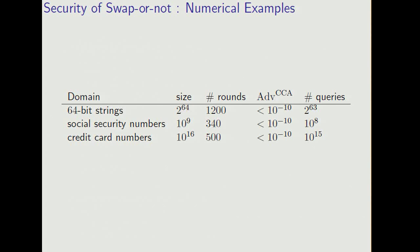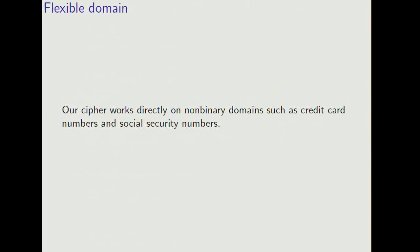We're used to seeing security only up to about the square root of the domain size. A nice feature of our cipher is that it works directly on non-binary domains, such as credit card numbers and social security numbers.